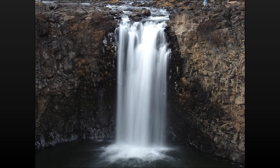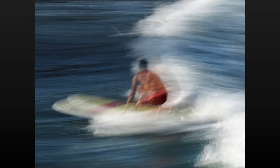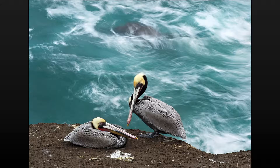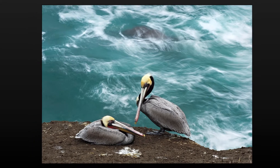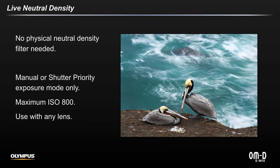The Live ND Mode feature in the EM1X allows you to slow down your shutter speed and get creative with subject matter like waterfalls, rivers and streams, ocean waves, and much more. Live ND gives you neutral density effects up to 5EV with any lens.